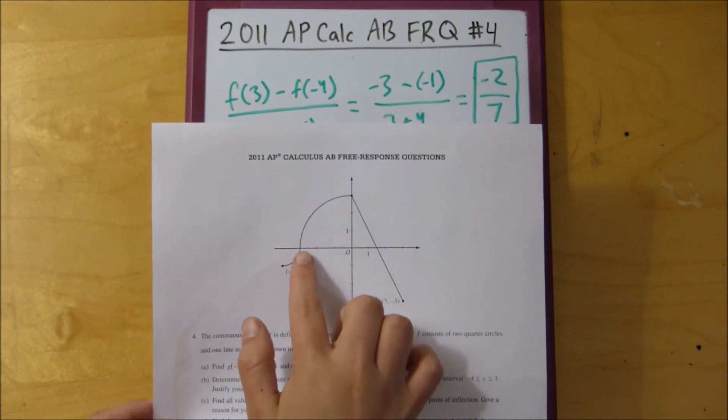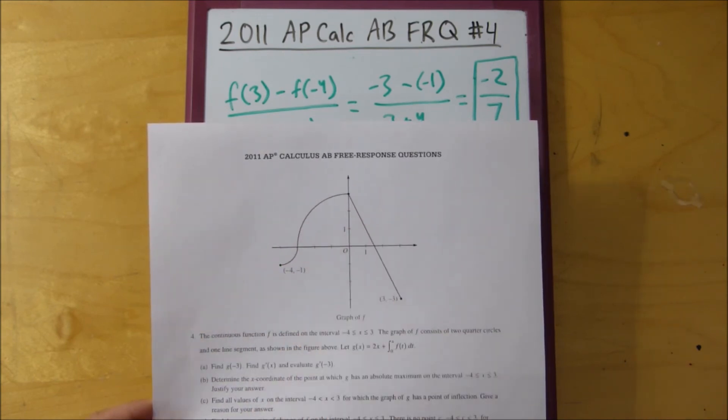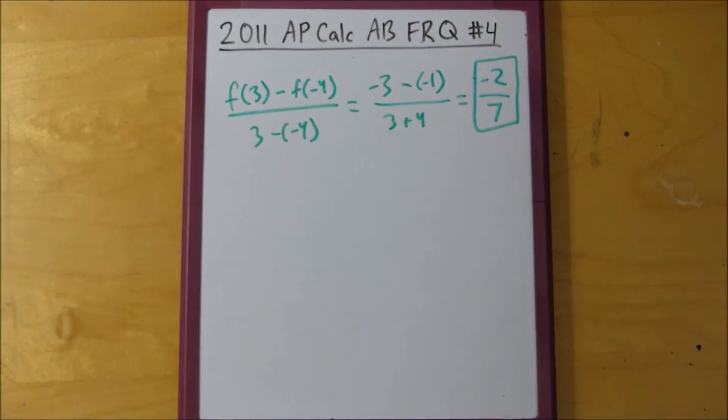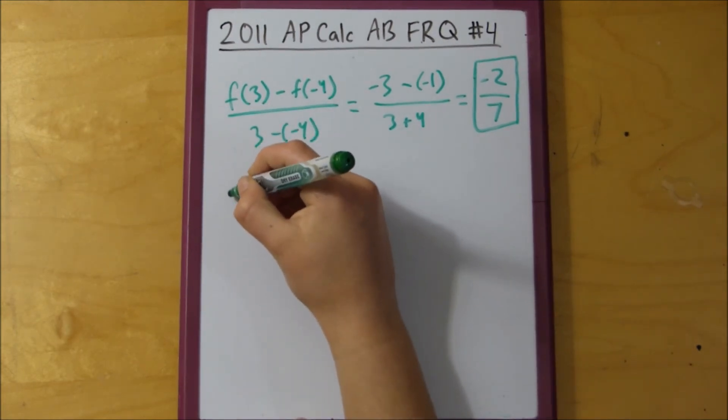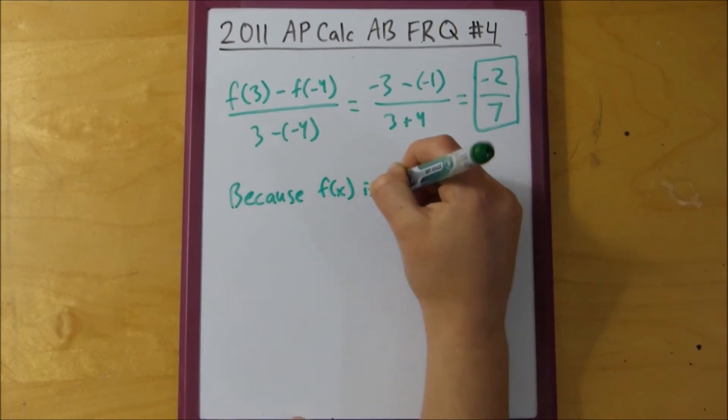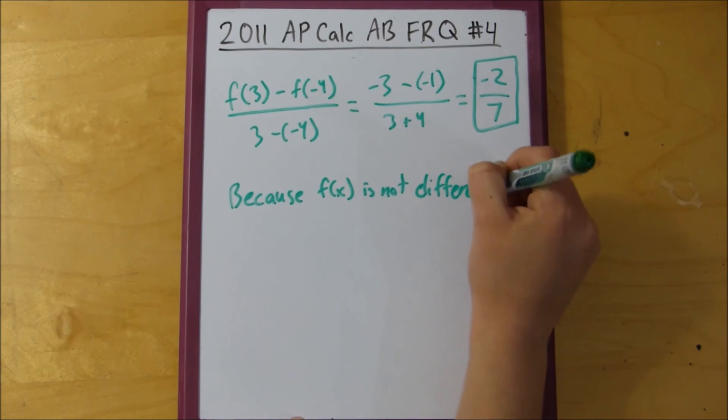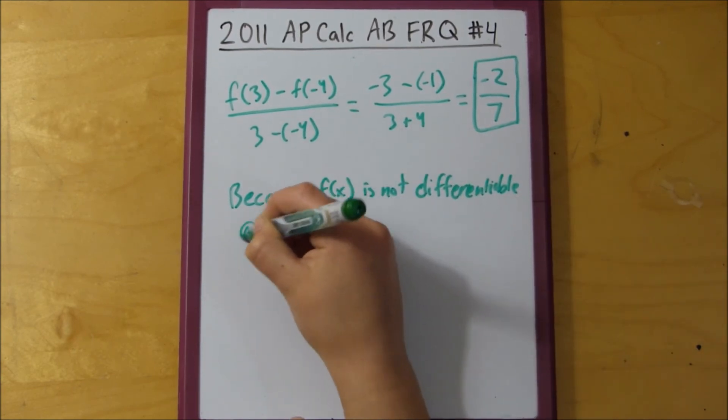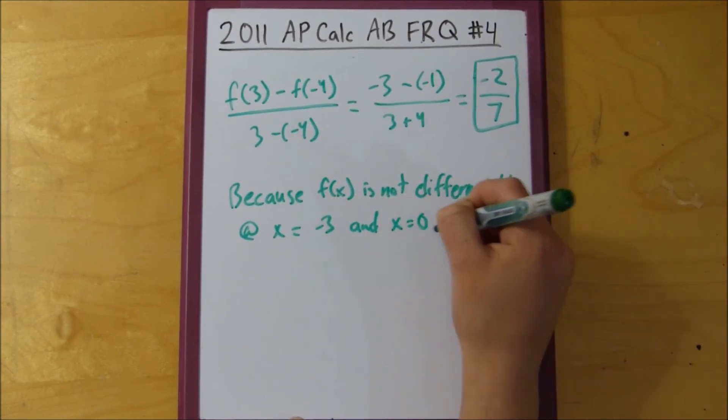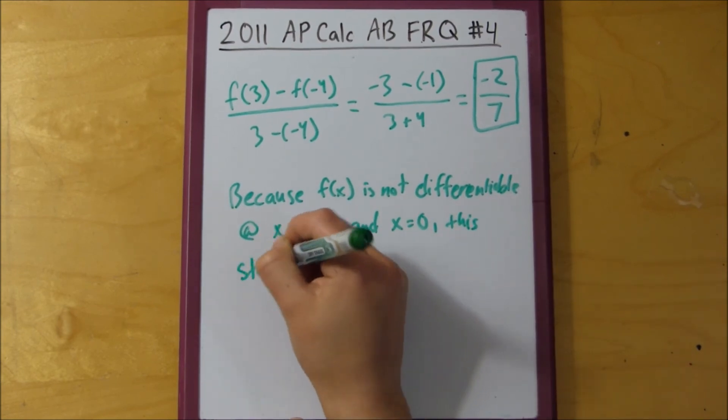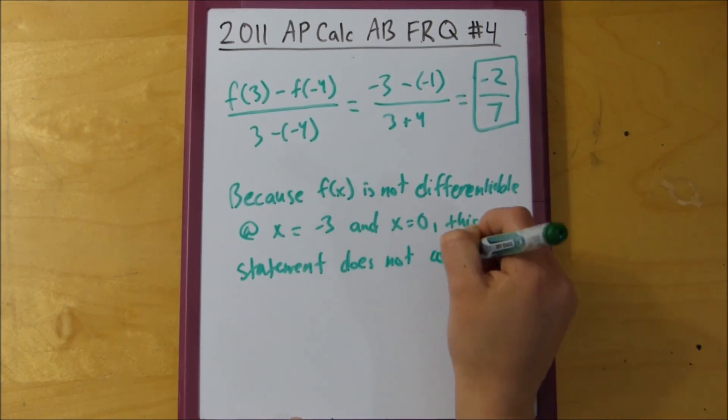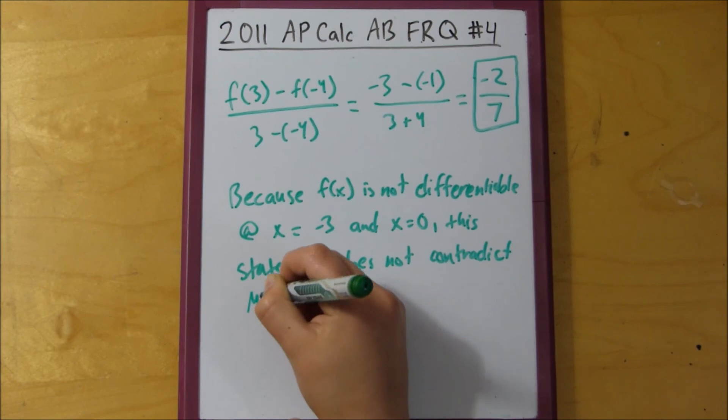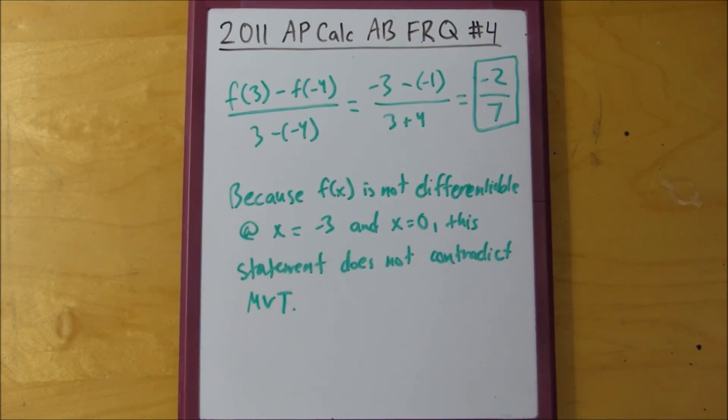So, you can simply say that because f of x is not differentiable at x equals negative 3 and x equals 0, this statement does not contradict mean value theorem. If you want, you could write out what mean value theorem is, but I think that might be overkill. As long as the AP reader knows that you have the basic idea of mean value theorem, this explanation should be sufficient.